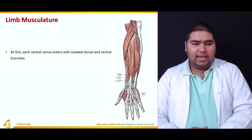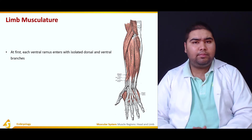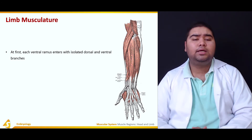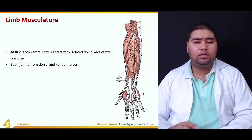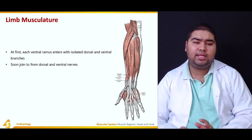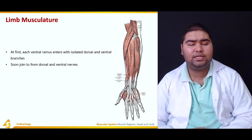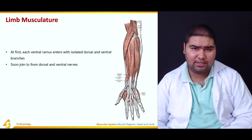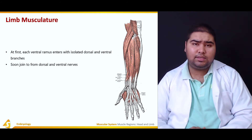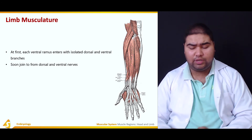At first, each ventral ramus enters with isolated dorsal and ventral branches — completely separate from each other. However, with development they join together to form the dorsal and ventral nerves.